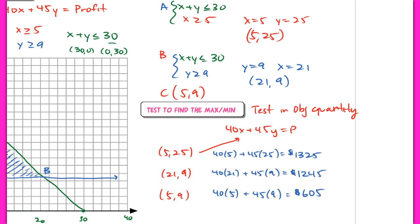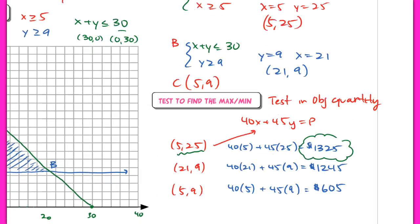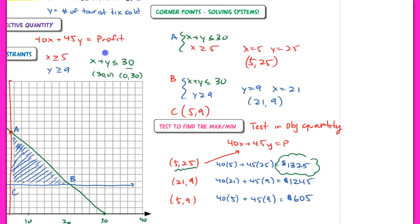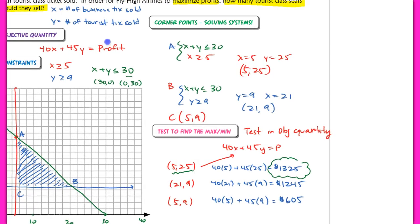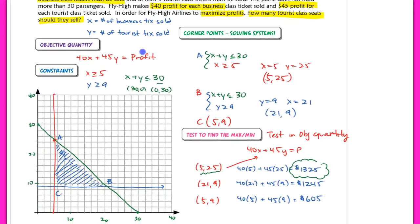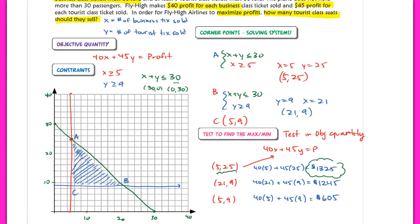So as you can see, the maximum profit here is going to occur when you sell five business class tickets and 25 tourist tickets. So this is basically the coordinate that yields the largest profit. And we want to answer the original question. Because it asks how many tourist class seats should they sell?